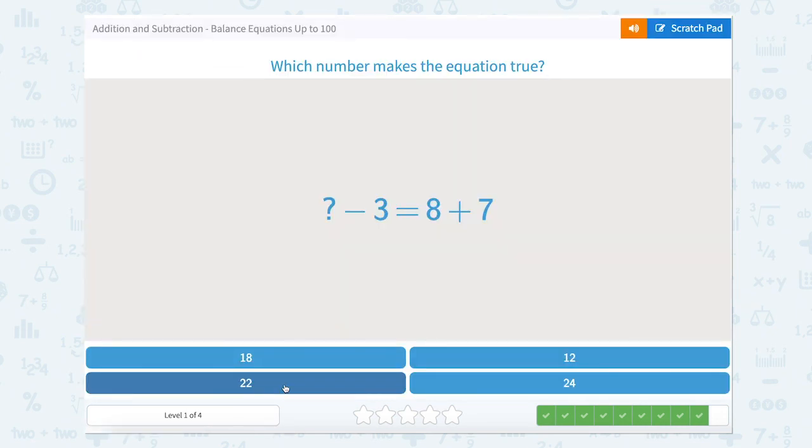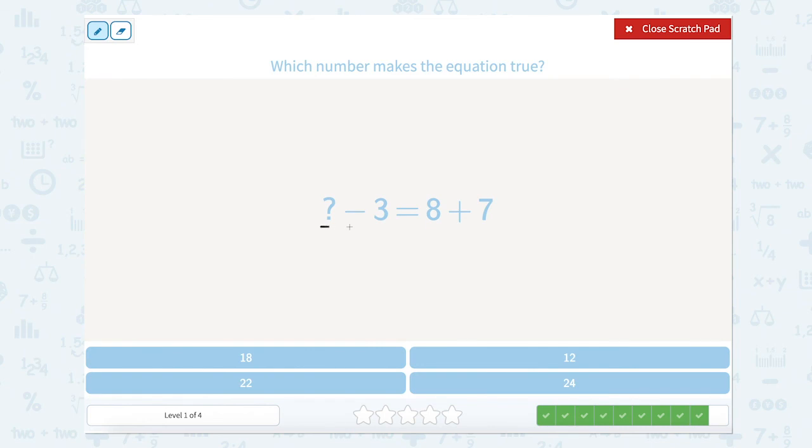And now we are on to our last one. Something minus 3 equals 8 plus 7. So we're looking at our two sides of the equal sign. 8 plus 7 is 15. So something minus 3 equals 15. I can always add that 3 to 15 to figure that out.